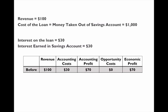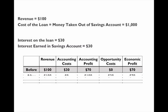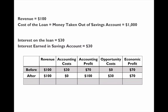Now he takes the money out of the savings account. Revenue is still one hundred dollars — only costs have changed. The accounting cost is now zero because he's paid off the loan and no longer has to make that three percent payment. So the accounting profit is now one hundred dollars — revenue of one hundred dollars with no accounting cost.